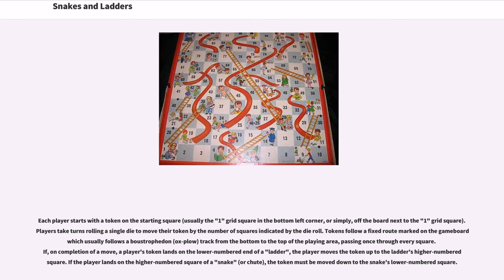Each player starts with a token on the starting square. Players take turns rolling a single die to move their token by the number of squares indicated by the die roll. Tokens follow a fixed route marked on the game board, which usually follows a boustrophedon track from the bottom to the top of the playing area, passing once through every square. If, on completion of the move, a player's token lands on the lower numbered end of a ladder, the player moves the token up to the ladder's higher numbered square. If the player lands on the higher numbered square of a snake, the token must be moved down to the snake's lower numbered square.